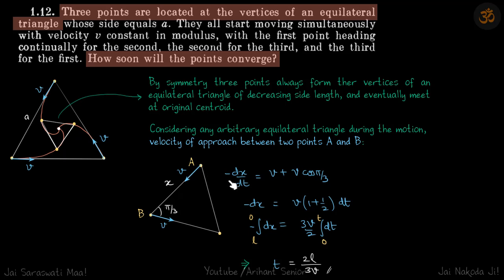The velocity of approach is -dx/dt. Since x is the length between them and the length is decreasing with time, to make the term positive we put a minus here. This equals V + V cos(π/3).